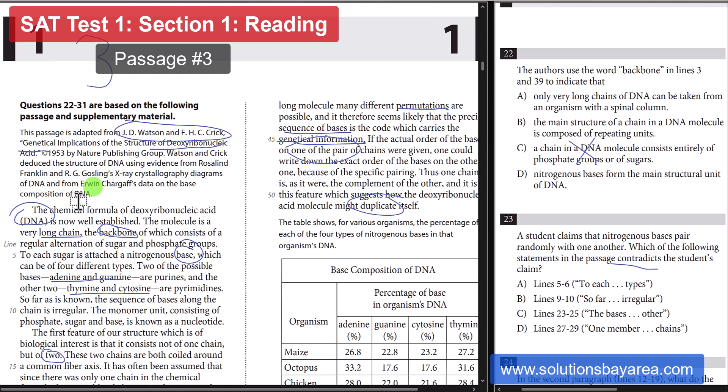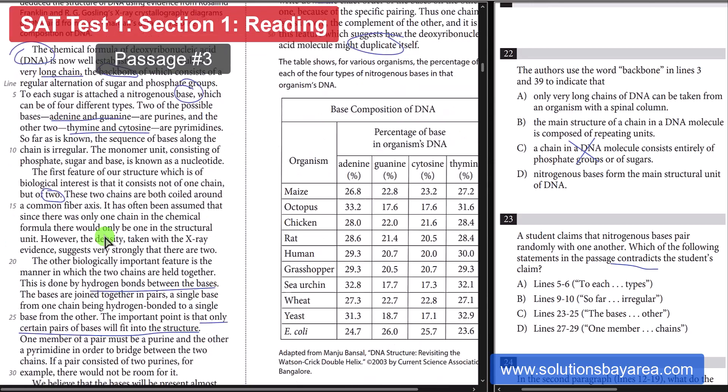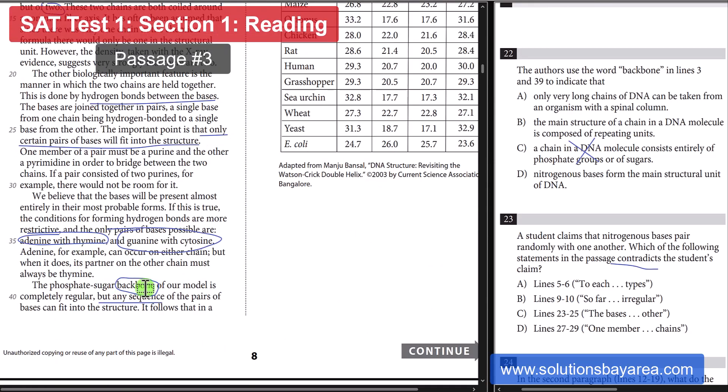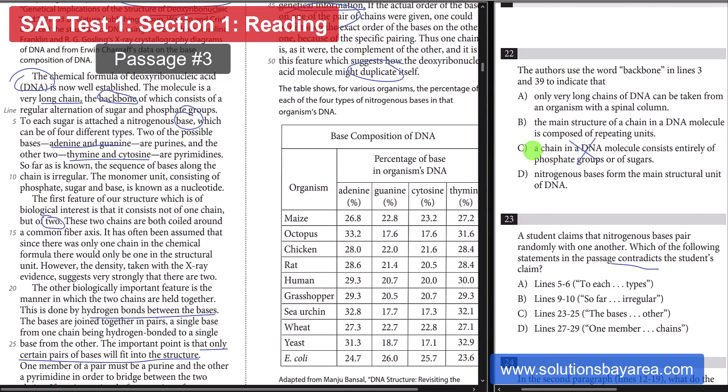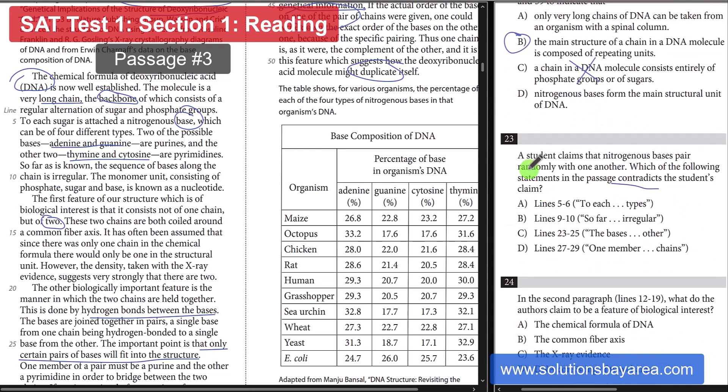If you take a look, going back over here, it talks about the backbone, which consists of regular alternation. And we're going to go down to line 39. Also talks about the word backbone. The reason why they use the word backbone is that it is the main structure of the DNA. Be very careful. A lot of people choose choice C, which is wrong. A chain in a DNA molecule consists entirely of phosphate and groups of sugars. That is not the point. We're going to move on to question number 23.